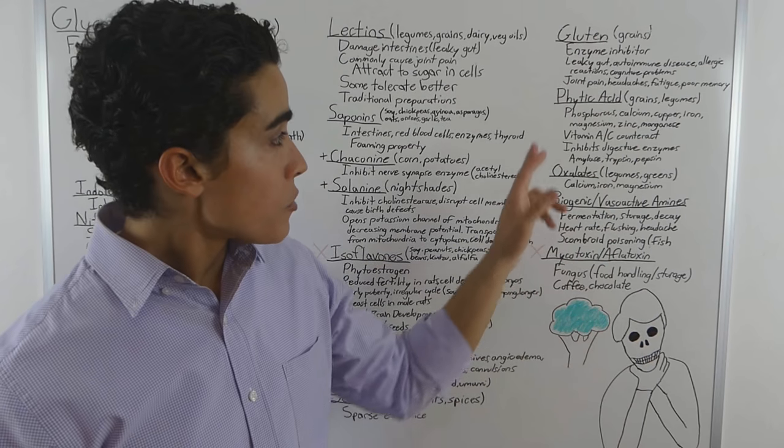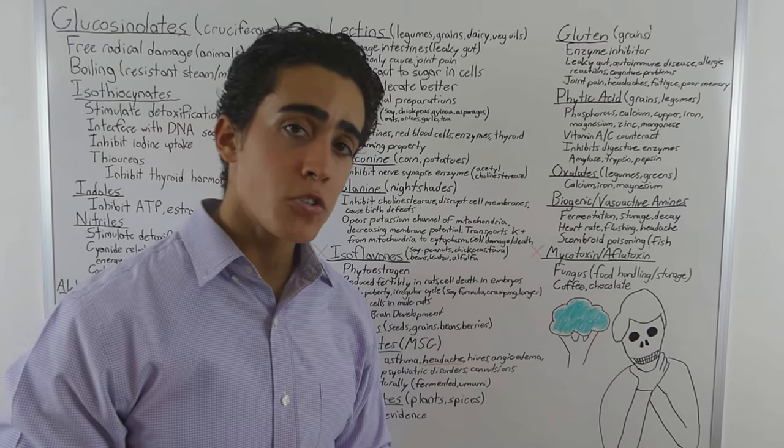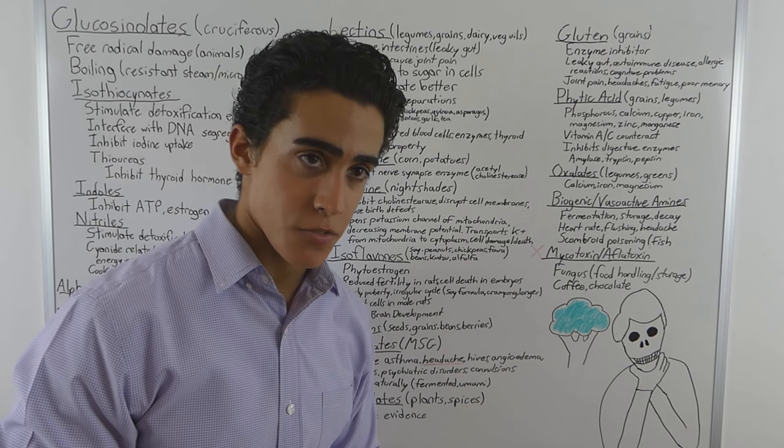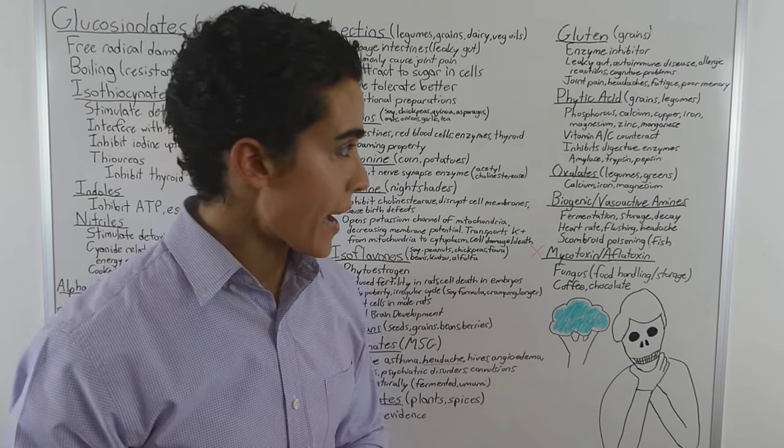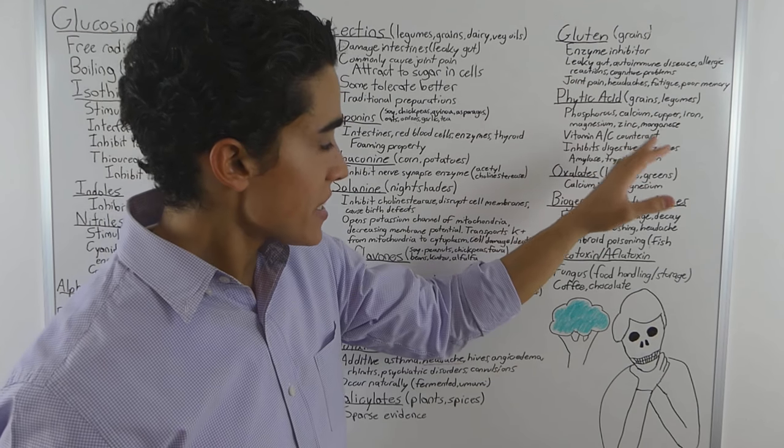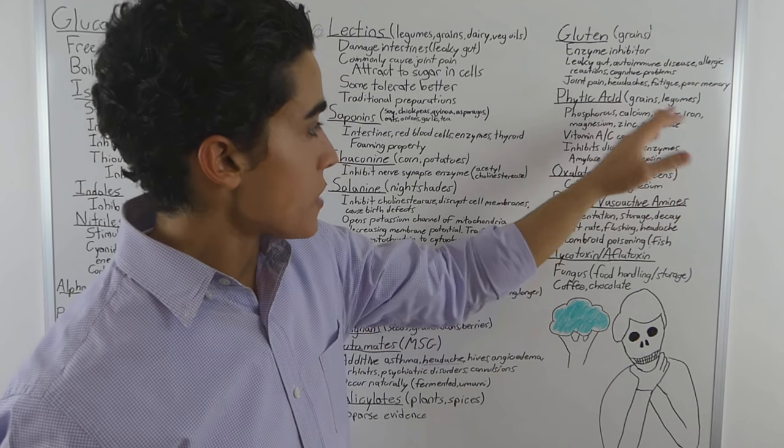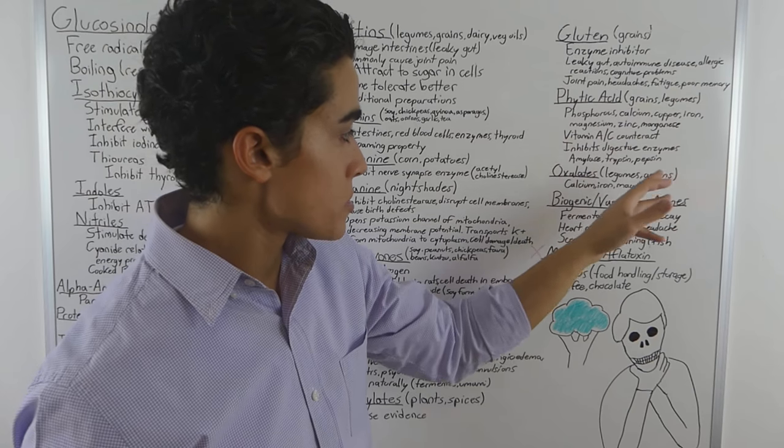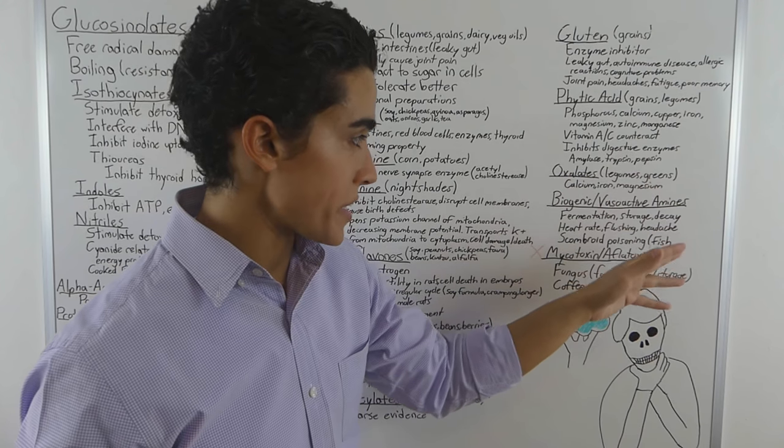Phytic acid and oxalates are the two big things that are spoken about in a negative light on a vegan or a vegetarian diet. And these inhibit various minerals. Phytic acid being found in grains and legumes. Oxalates being found in legumes and greens.